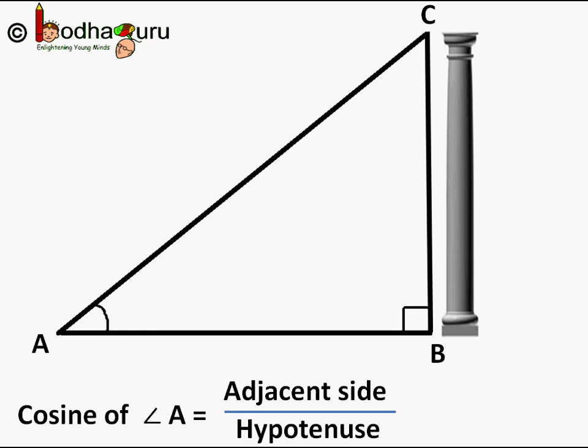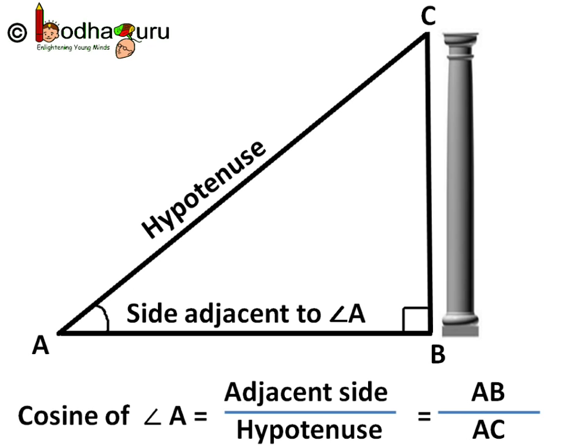Cosine of angle A is the ratio of adjacent side to angle A and hypotenuse. That is, ratio of AB which is the side adjacent to angle A, and AC which is the hypotenuse.